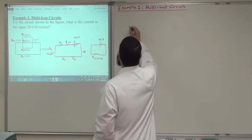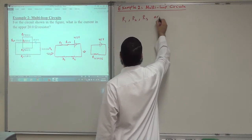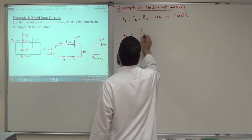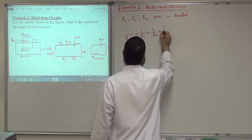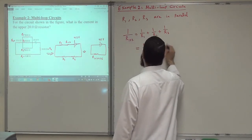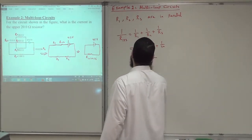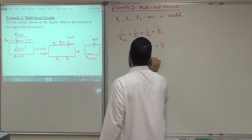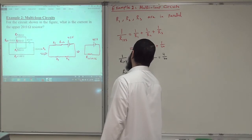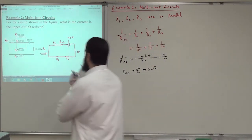What is R123? For R1, R2, and R3 connected in parallel, 1 over R123 equals 1 over R1 plus 1 over R2 plus 1 over R3. This equals 1 over 20 plus 1 over 10 plus 1 over 20, which gives 1 plus 2 plus 1 over 20, that is 4 over 20. So R123 equals 20 divided by 4, which gives us 5 ohms.